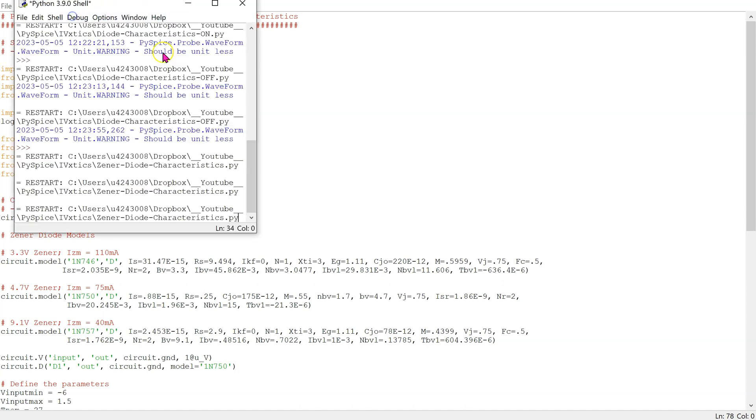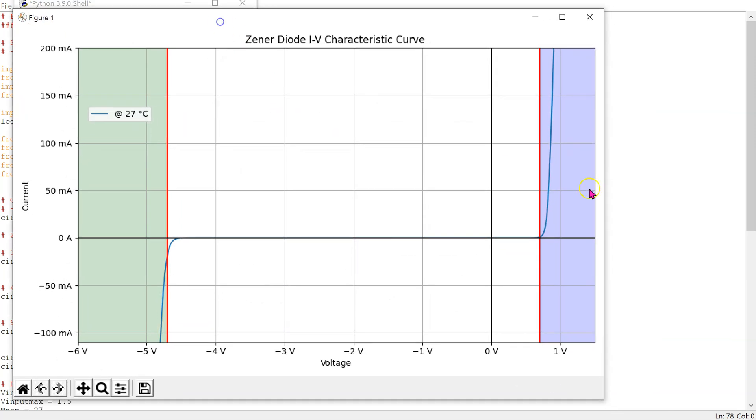When we run this code, we obtain the zener diode characteristics, where we can see the reverse breakdown, OFF and ON regions.